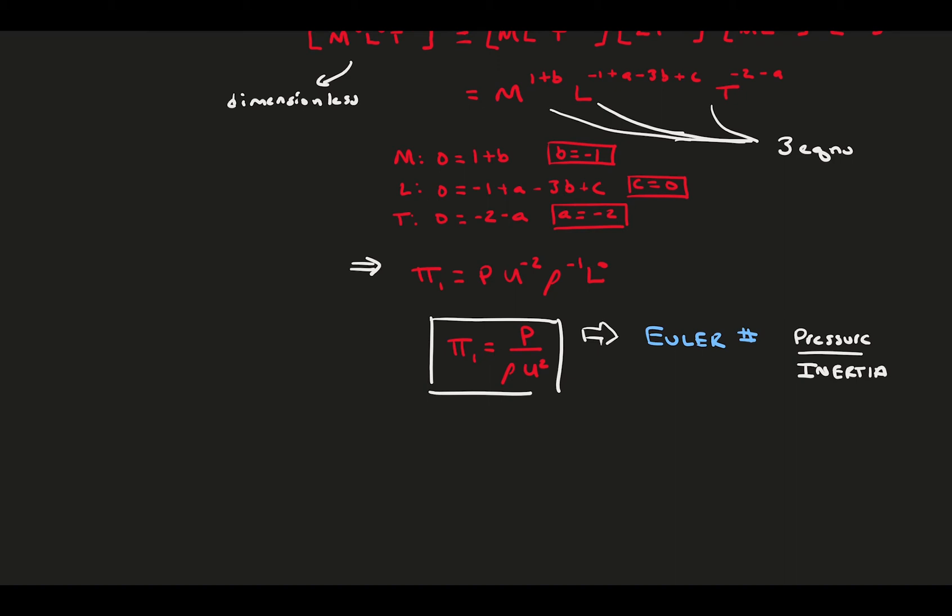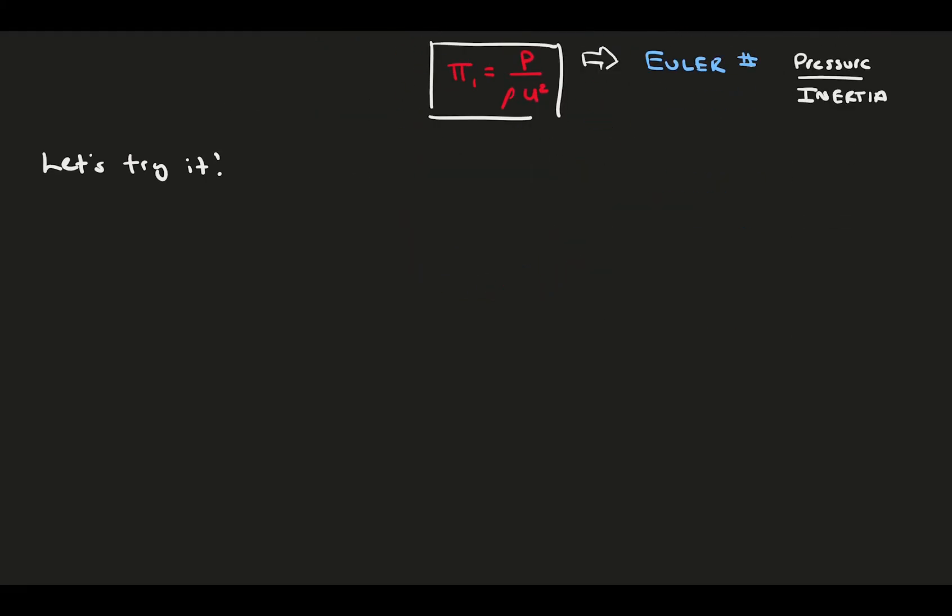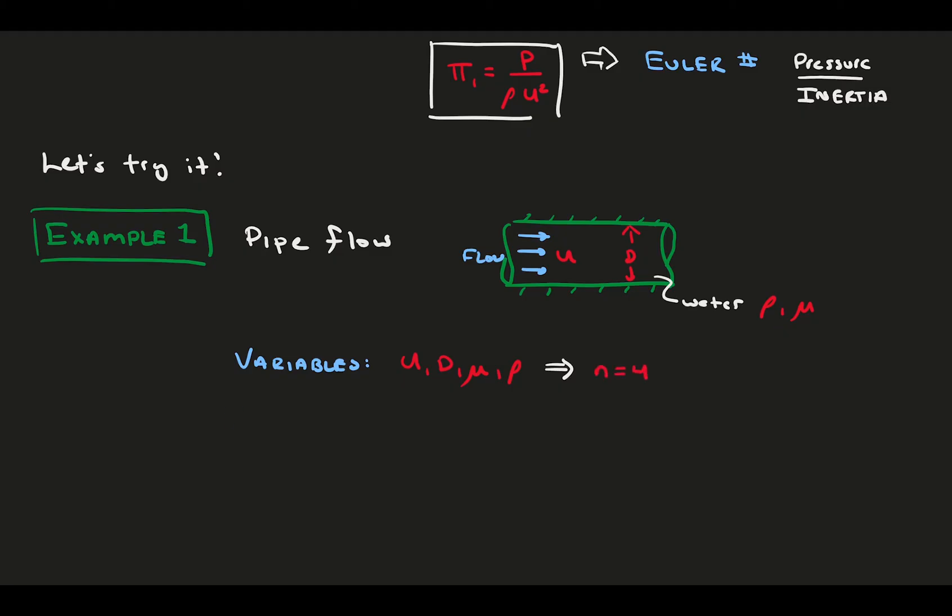If you remember from the last video on non-dimensional numbers, the Euler number compares pressure to inertia. And that's it. In seven easy steps, you can find any non-dimensional parameter your variables can provide. Let's do some examples. In the first example, we'll consider hydrodynamics and pipe flow. Here, we have water flow going through a circular pipe with velocity u. The pipe has diameter d. And since we're working with water, we can also consider the density and viscosity which are fluid properties. Gather our variables, u, d, mu, and rho. This means we have n equals 4. Next, we inspect the base dimensions of each variable. All variables are some combinations of mass, length, and time, so m equals 3. If n equals 4 and m equals 3, there is only one possible non-dimensional number in this group.